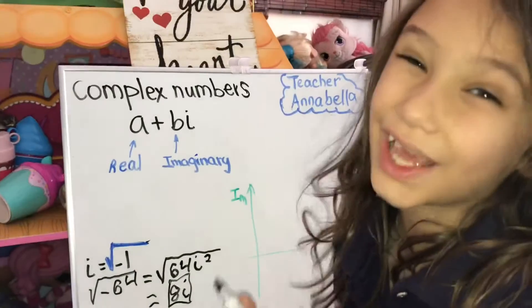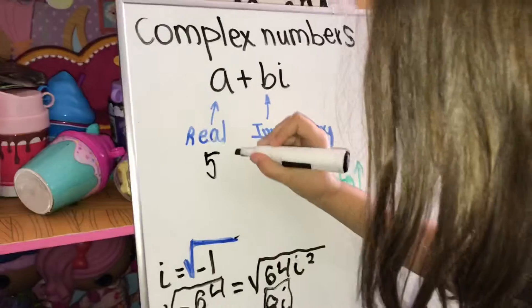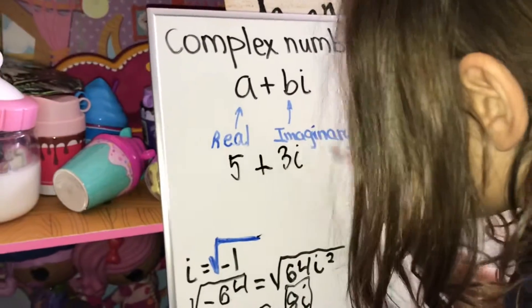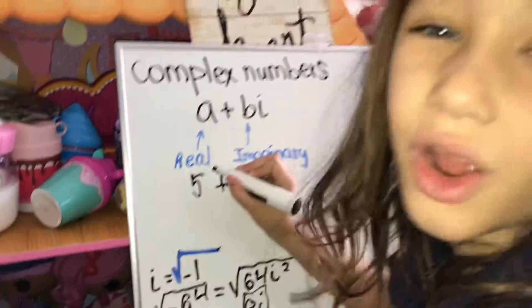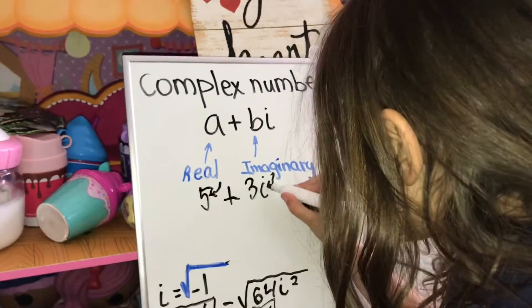Now I'm going to give you an example of a complex number. Five is our real number and three I is our imaginary number.